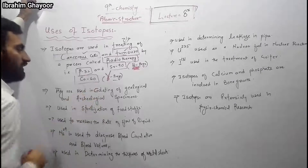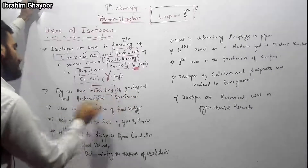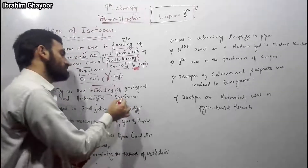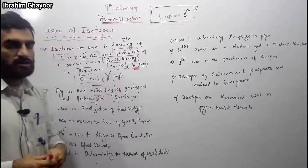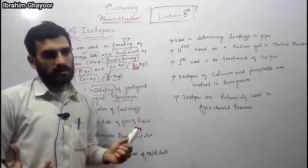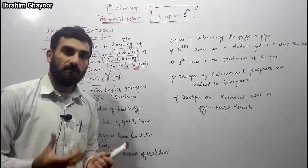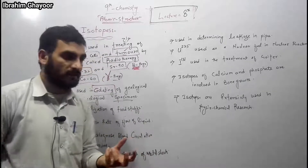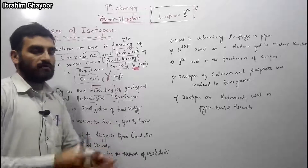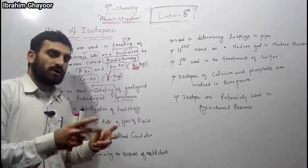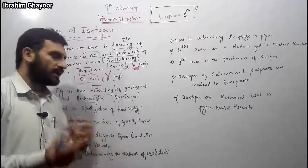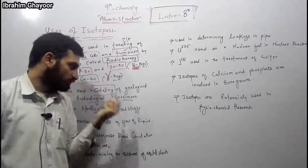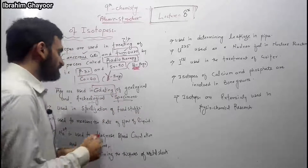Isotopes are used in carbon dating of geological and archaeological specimens on a geological and archaeological time scale. For example, a dead plant or dead animal can be carbon dated. Carbon isotopes such as carbon-13 are used in this process.